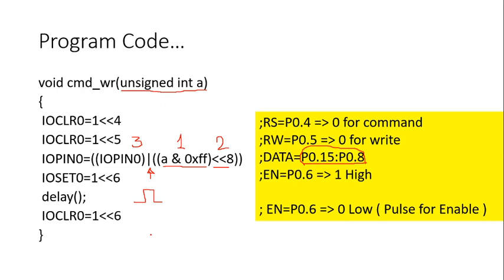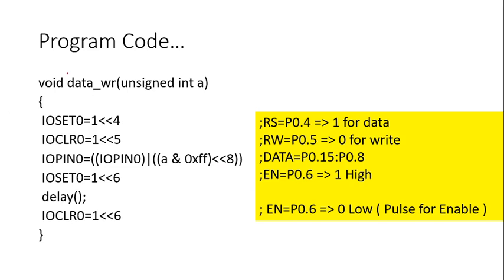For the data write function there is only one difference compared to command write: instead of making P0.4 zero, we make it 1. So instead of using IOCLEAR, it will be IOSET for that pin. The rest of the sequence is the same. This is the data write function — IOSET0 makes P0.4 bit 1. The remaining sequence is the same for LCD data write. This is the function used to send data to the LCD.